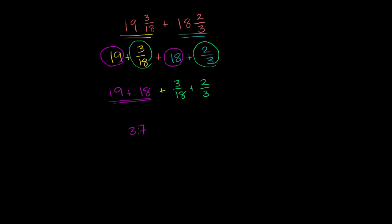And then 3/18 plus 2/3, to add them, I need to have the same denominator. The least common multiple of 18 and 3 is 18. So let's convert 2/3 to something over 18. If I multiply the denominator by 6, I'd also have to multiply the numerator by 6. So it's the same thing as 12 over 18.